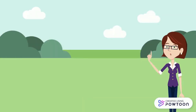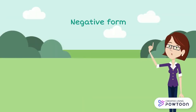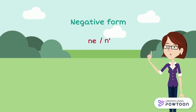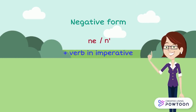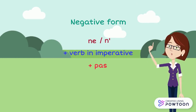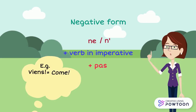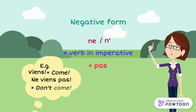In the imperative, the construction of the negative form is as follows: 'ne' or an apostrophe, plus the verb in the imperative, plus 'pas'. For instance: 'Viens' — come — 'ne viens pas' — don't come.